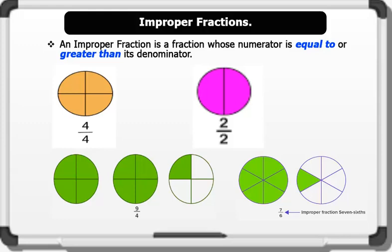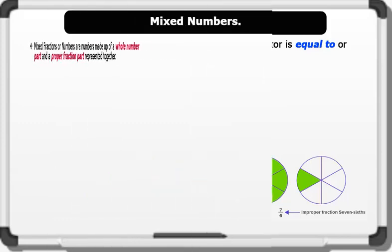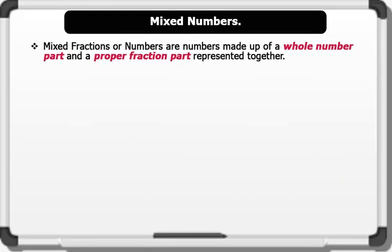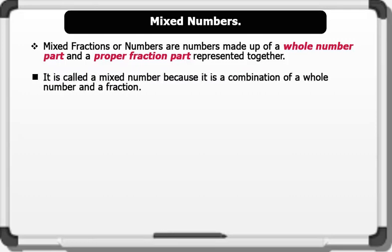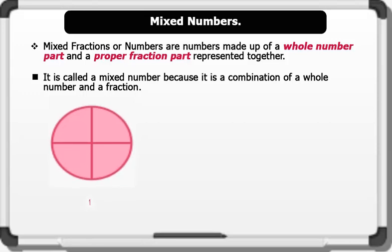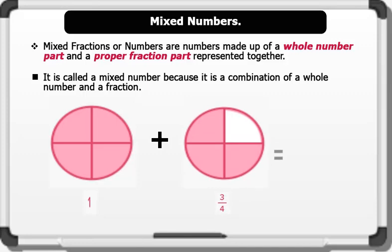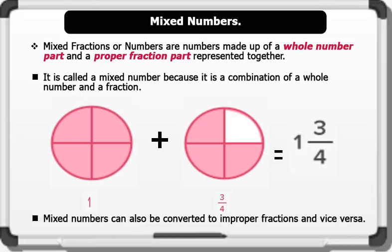Now let's see what mixed fractions are. Mixed fractions, or numbers, are numbers made up of a whole number part and a proper fraction part represented together. It is called a mixed number because it is a combination of a whole number and a fraction. For instance, a one whole number added to a fraction of 3 over 4 gives us one whole number 3 over 4. Note that mixed numbers can also be converted to improper fractions and vice versa.